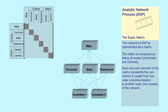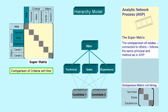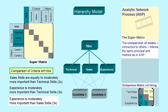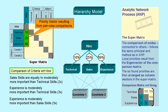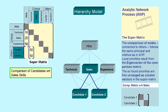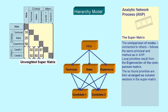This matrix is called the supermatrix. The comparison of nodes connected to others and the calculation of local priorities follows the same principle and method as in AHP. Local priorities result from the eigenvector of the comparison matrix. The so-found priorities are then arranged as column vectors in the supermatrix. After all comparisons are done, we get the unweighted supermatrix.